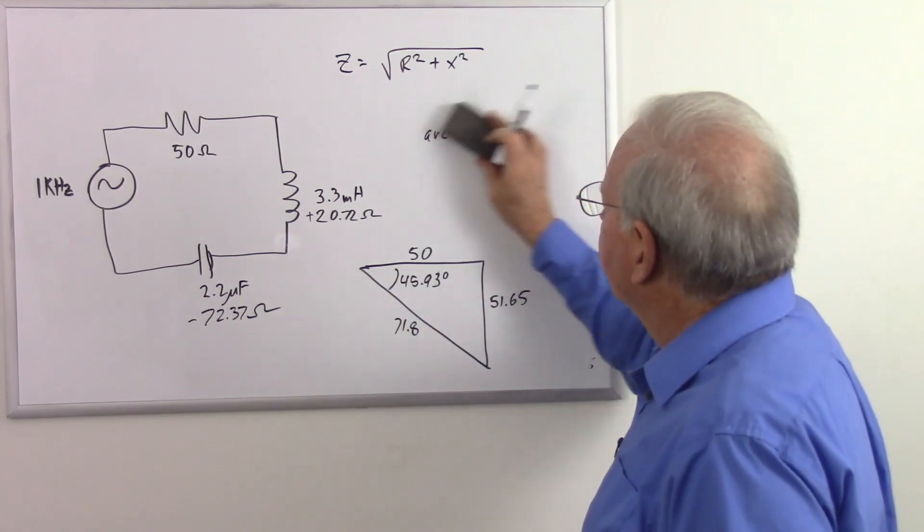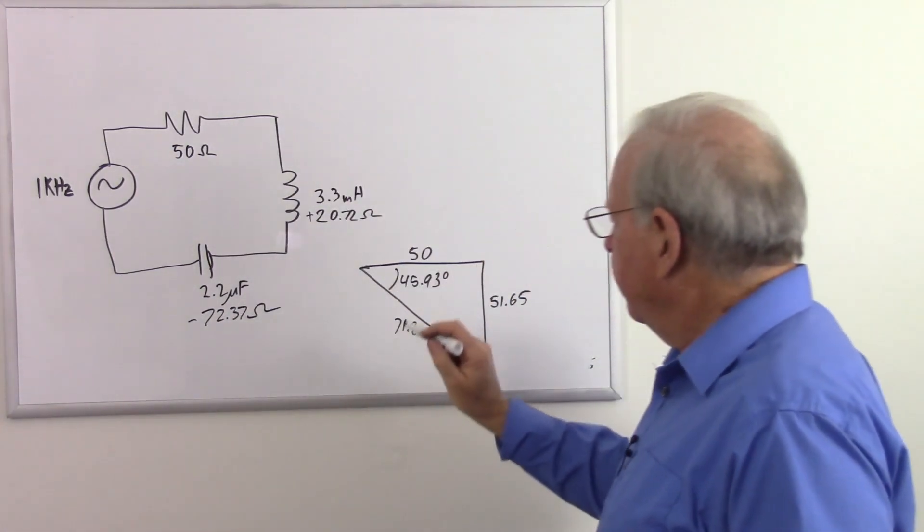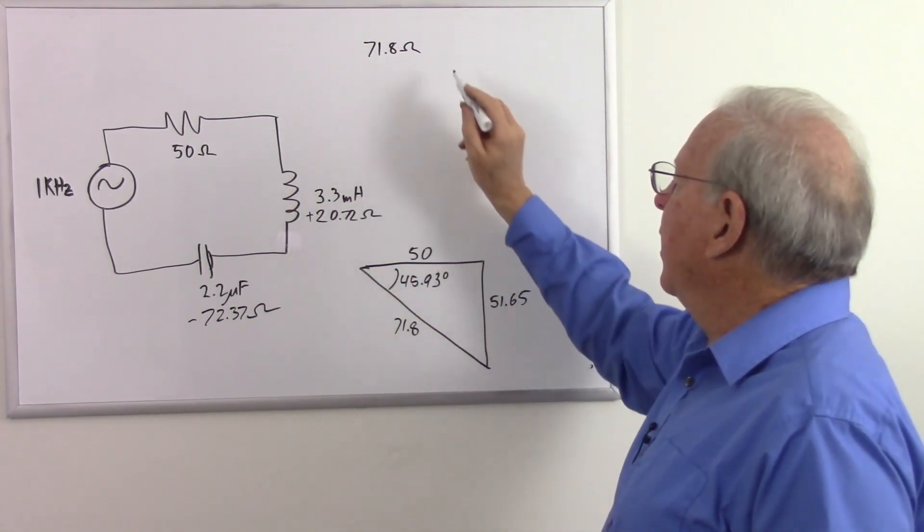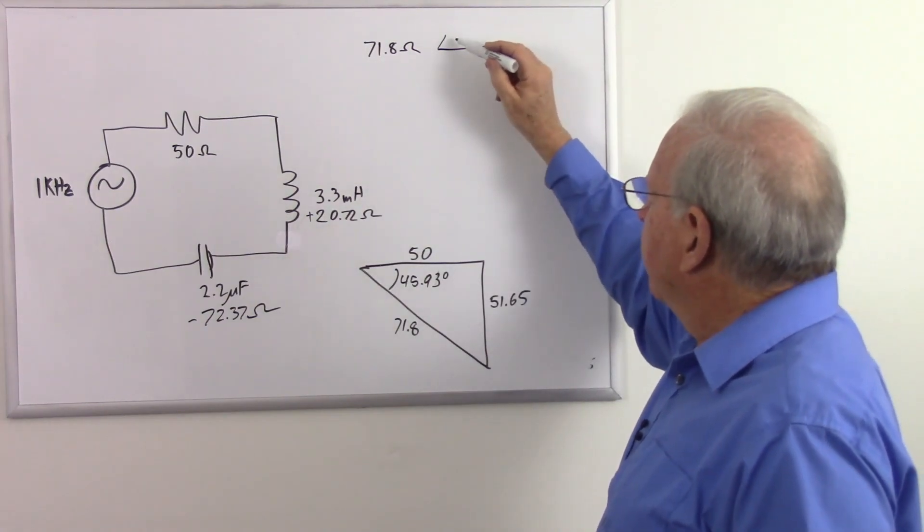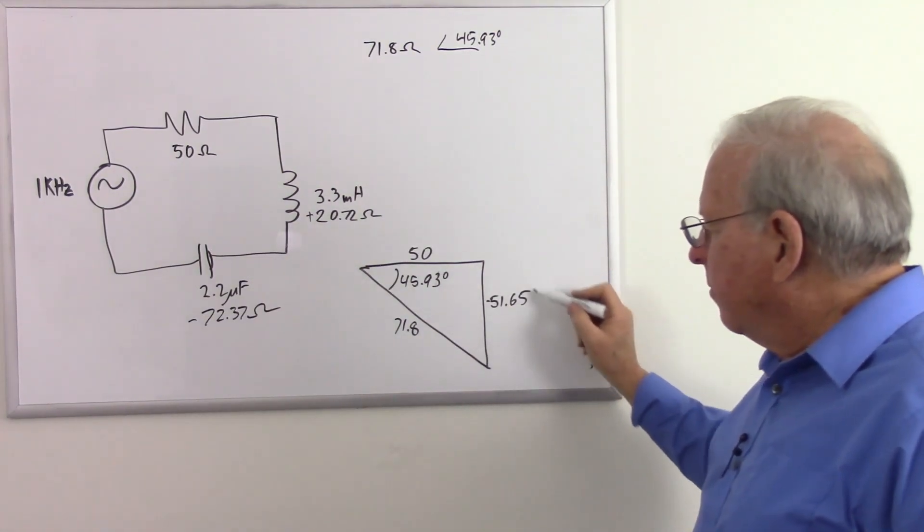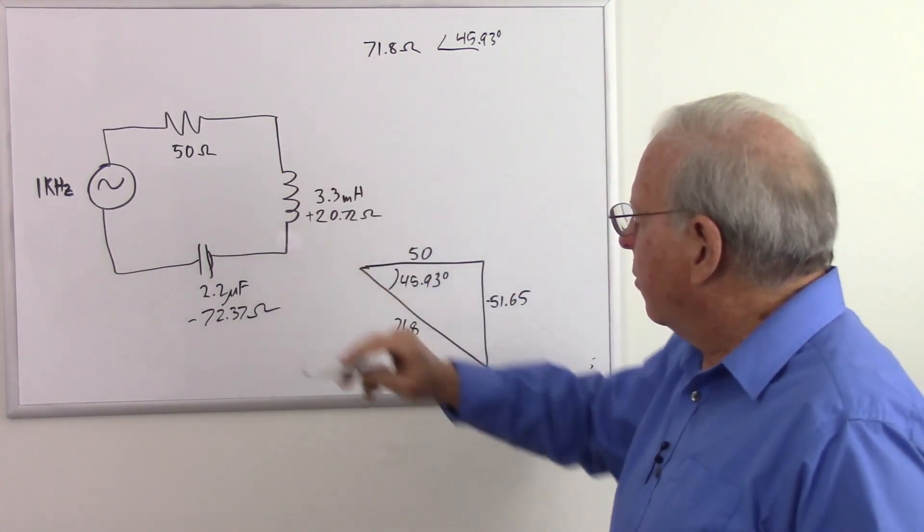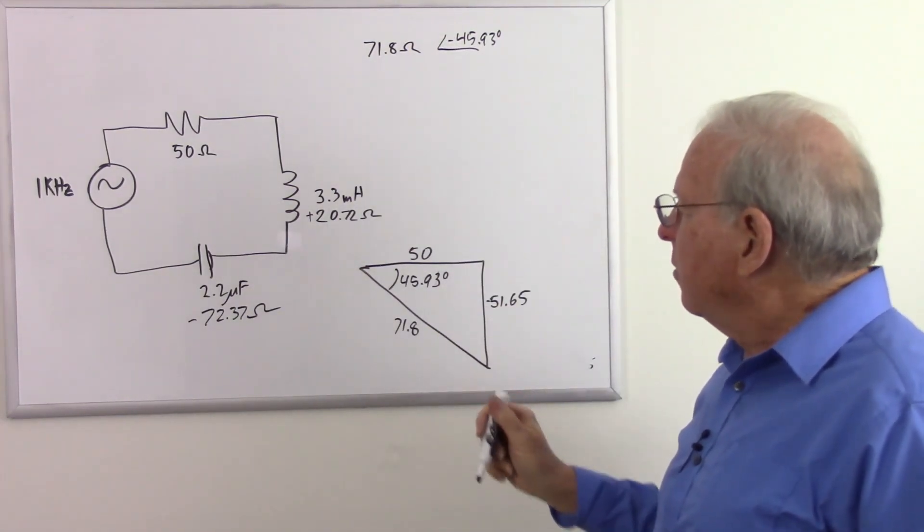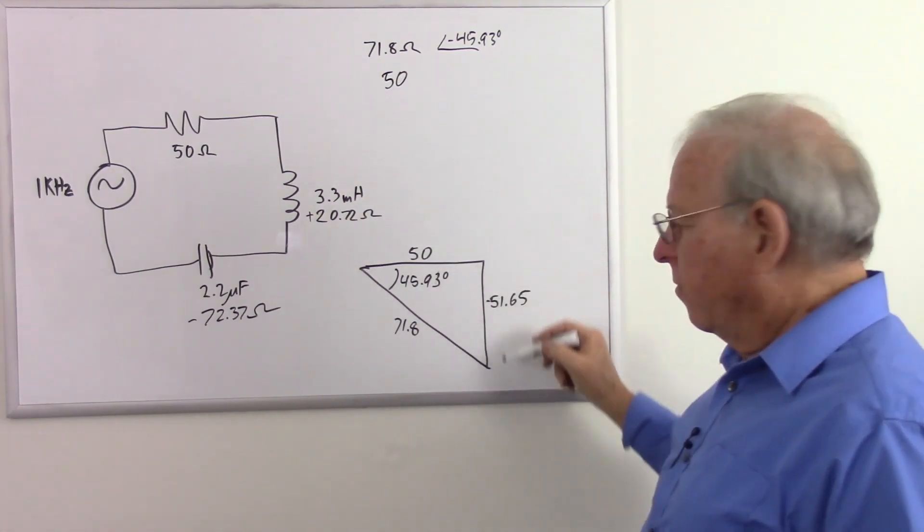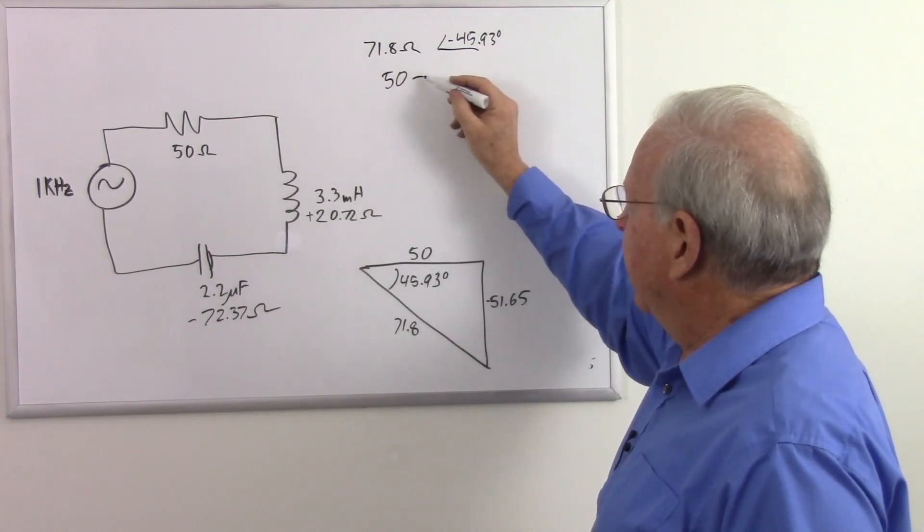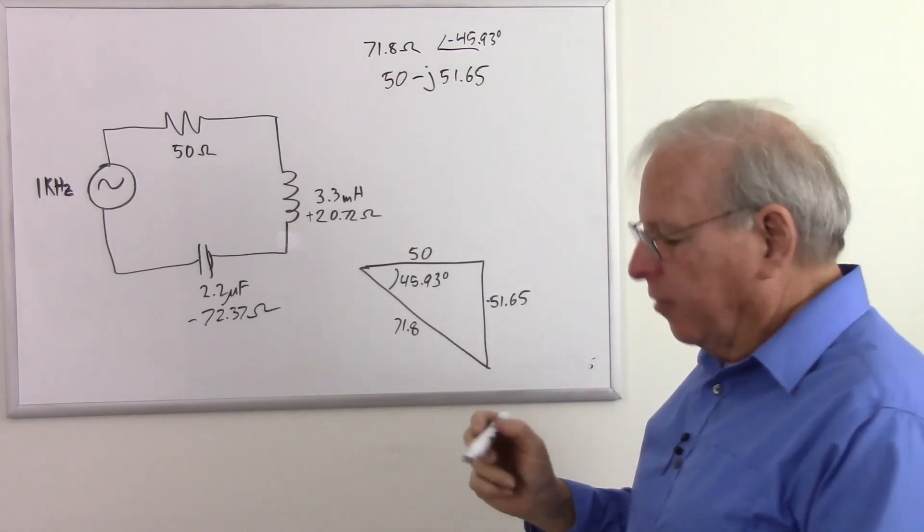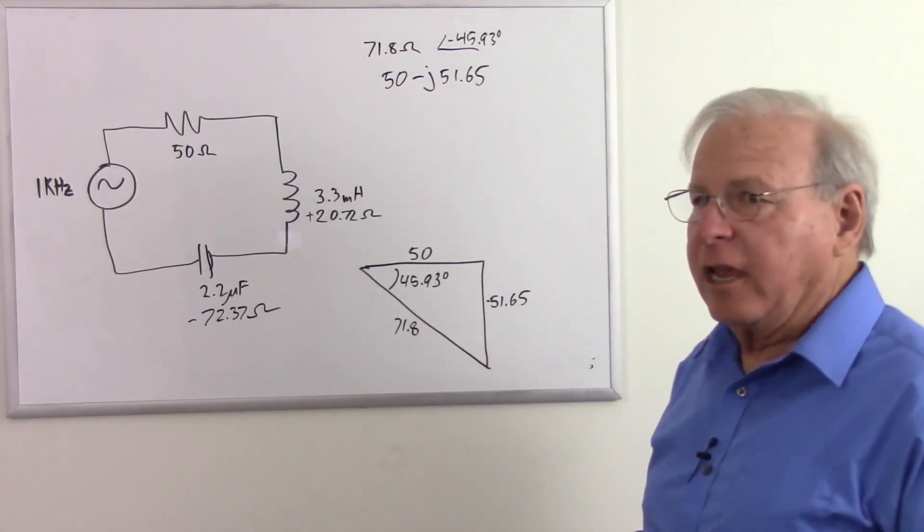So let's write this in our proper polar notation. 71.8 ohms, hypotenuse of the triangle, with a phase angle of 45.93. And because that's a negative number, because that's capacitive reactance left over after all the math, we have a negative phase angle. And in rectangular notation, 50 plus or minus j. Minus j because it's capacitive. Minus j 51.65. So there is our impedance in polar notation and rectangular notation.